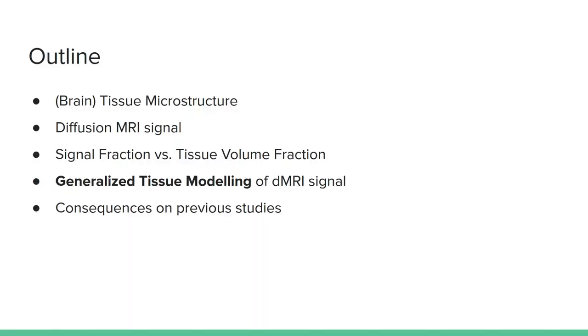I will start by introducing what tissue microstructure is, then I will sketch some basic concepts of diffusion MRI that we will use to understand the difference between the concepts of signal fraction and tissue volume fraction, focusing on how these two are not equivalent. Finally, I will show you the model we proposed in the paper which solves this ambiguity and I will make some final remarks on the impact of this new model on previous studies.